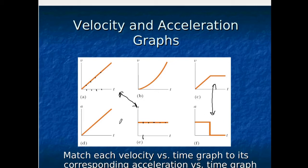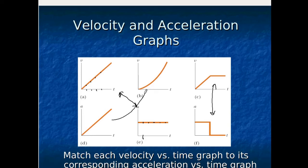So clearly D and B go together since those are the ones left. We can reason through this: if the acceleration is increasing at a steady rate, that means how quickly the velocity changes is itself changing. Graph D shows that in the first instant the velocity goes up a little bit, in the next instant it goes up more, then even more, and even more again. So that graph shows that where the acceleration is increasing, the velocity is changing at an ever-increasing rate.